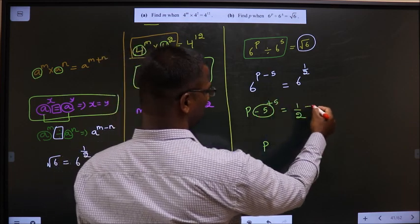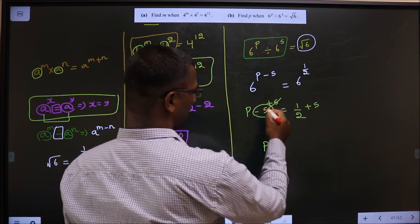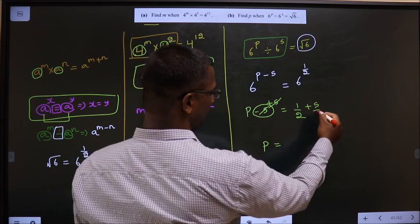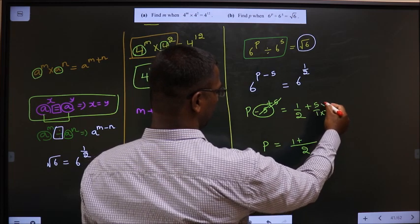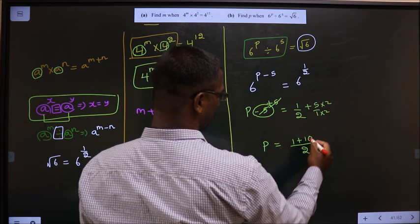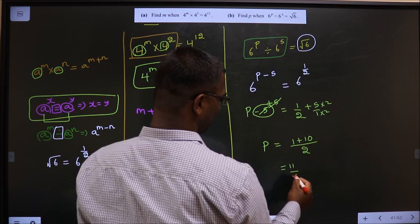For that, add 5 to both sides. Take the LCM: p = 1/2 + 5 = 1/2 + 10/2 = 11/2.